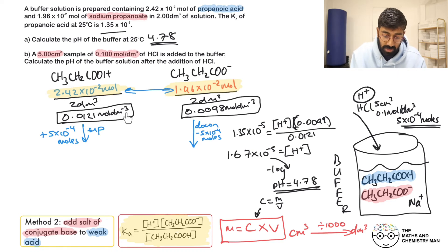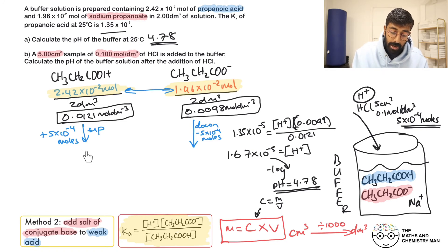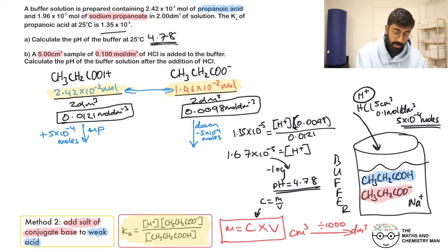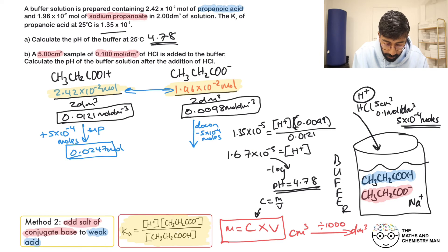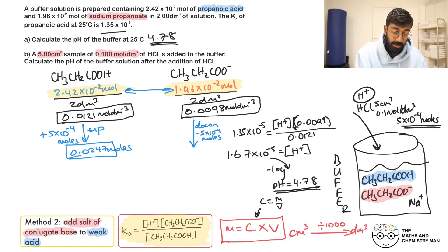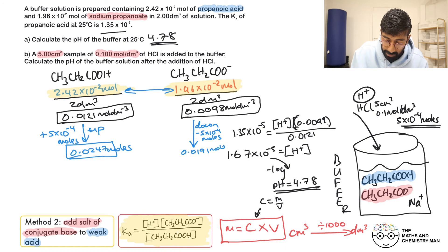Let's calculate the new moles after HCl addition. For the weak acid: 2.42×10⁻² + 5×10⁻⁴ = 0.0247 moles. For the conjugate base: 1.96×10⁻² − 5×10⁻⁴ = 0.0191 moles. Both values are in moles.